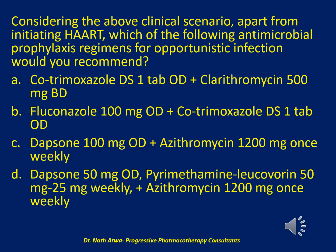The next question reads: Considering the above clinical scenario, apart from initiating HAART, which of the following antimicrobial prophylaxis regimens for opportunistic infection would you recommend? Would it be: A. Cotrimoxazole DS 1 tablet once daily plus clarithromycin 500 mg twice daily; or B. Fluconazole 100 mg once daily plus cotrimoxazole DS 1 tablet once daily; or C. Dapsone 100 mg once daily plus azithromycin 1200 mg once weekly; or would it be D. Dapsone 50 mg once daily, pyrimethamine/leucovorin 50 mg/25 mg weekly, plus azithromycin 1200 mg once weekly? I will give you 10 seconds to choose the correct answer from the listed options.